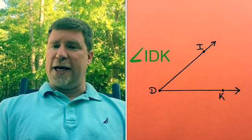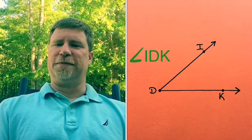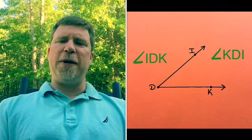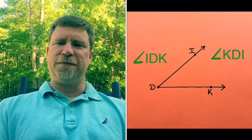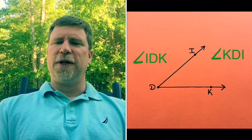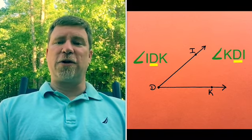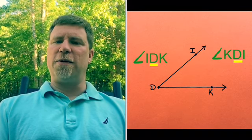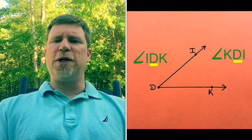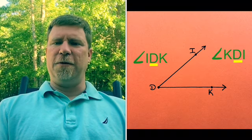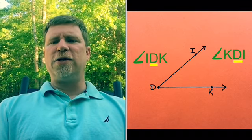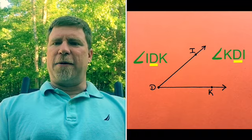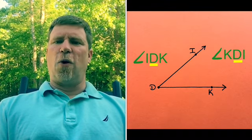We could name this angle the first possibility would be angle IDK—that's on purpose. The other possibility would be angle KDI, and those are the only two. If you noticed, the vertex or the label for the vertex always comes in the center, so you will always put that in the center of the name of the angle. The points on the rays can flip-flop; it can come first or last, so the order of those two do not matter.